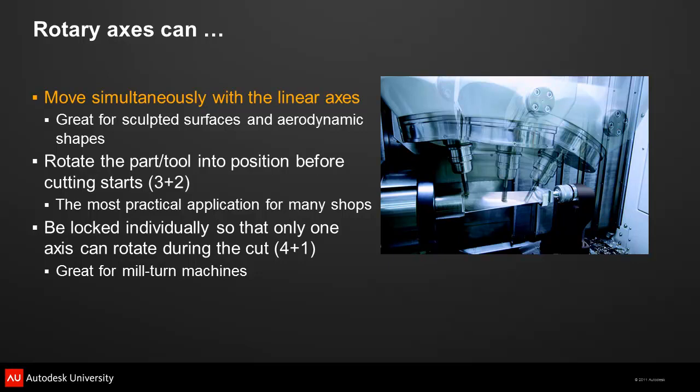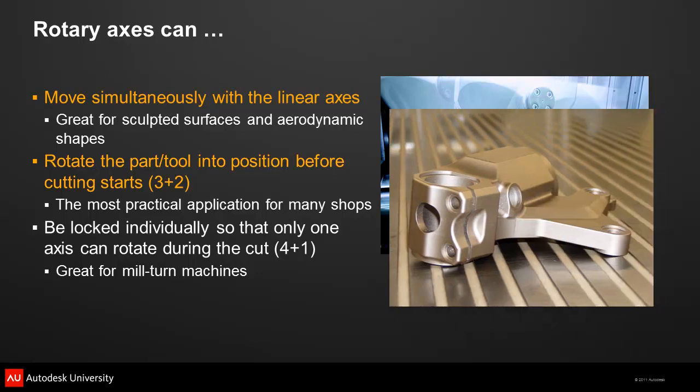In this example of a blade, the rotary axes move continuously during the cut. What you may not realize is that you don't have to use all 5 axes at the same time to get great benefits. One of the most practical applications is called 3 plus 2 machining. You use the rotary axes to rotate the part into position before the start of each cut, and then run a standard 3-axis toolpath, only worrying about rotary motion between operations.